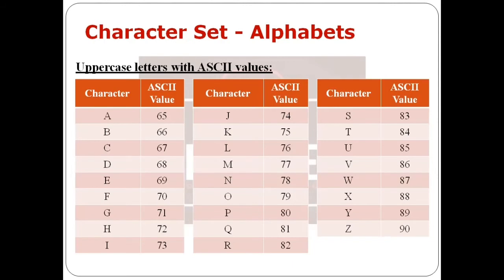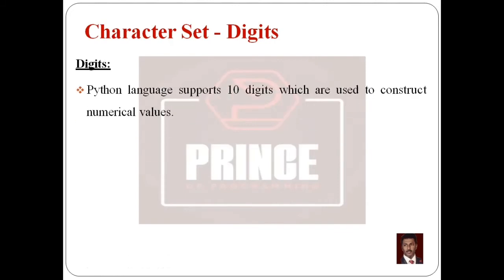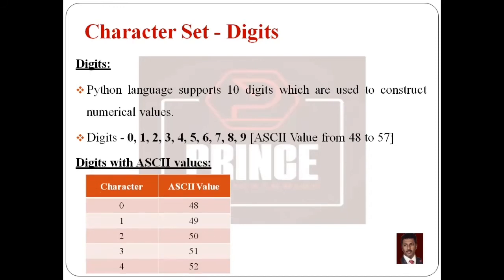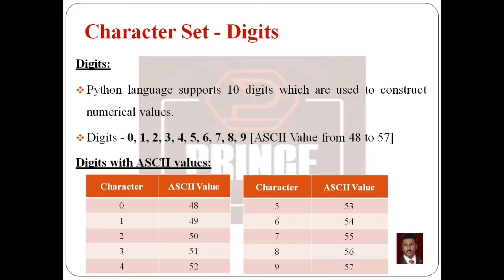These are the alphabets available in Python language. The next one is digits. Python language supports 10 digits, which are used to construct any numerical values. The digits are 0, 1, 2, up to 9. The ASCII values of the 10 digits range from 48 to 57. For 0, ASCII value is 48; for 1, ASCII value is 49; similarly, for 9, ASCII value is 57.